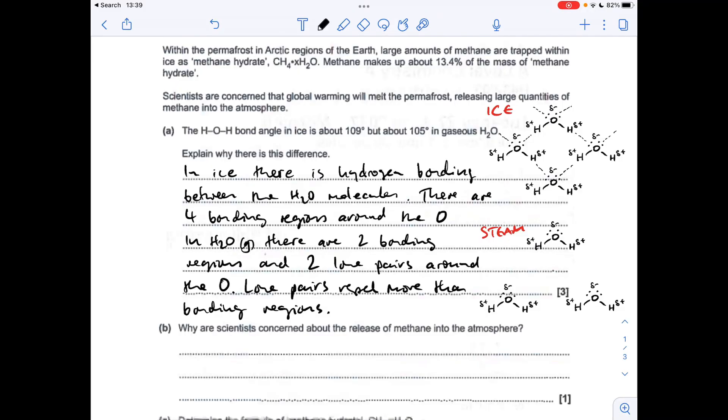Part B. Why are scientists concerned about the release of methane into the atmosphere? Well, methane is a greenhouse gas. Its bonds are able to absorb infrared radiation, so it will absorb that and then re-emit it into the atmosphere and warm the atmosphere up. So all we need to say is that CH4 is a greenhouse gas.